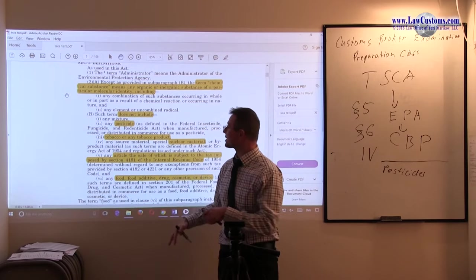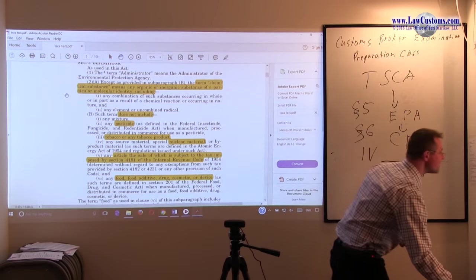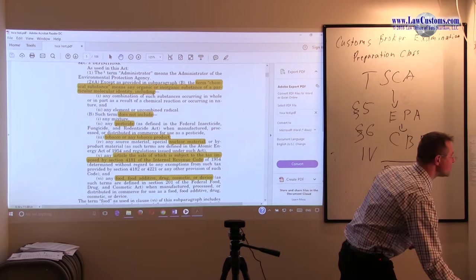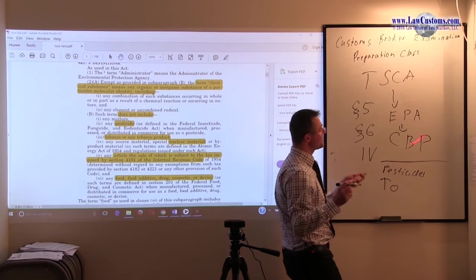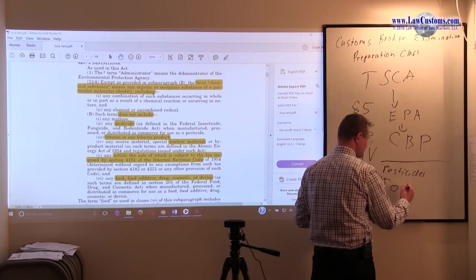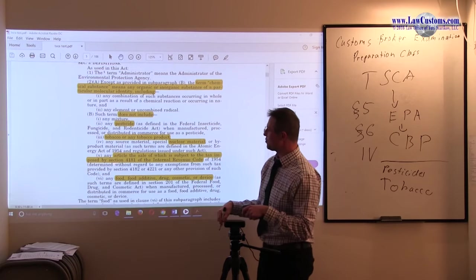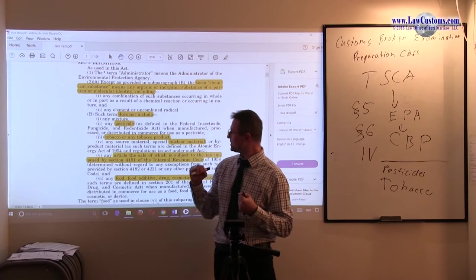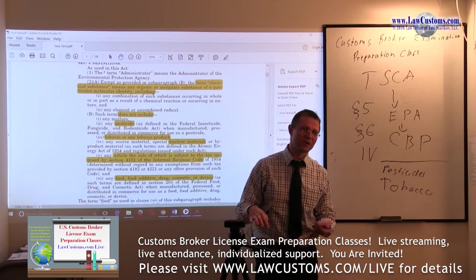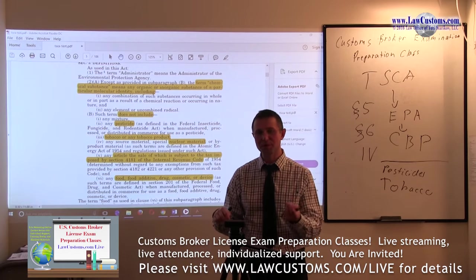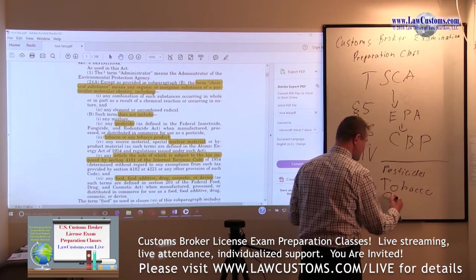Tobacco or any tobacco products—we just talked about the excise taxes. Tobacco products are outside the jurisdiction of EPA's Toxic Substances Control Act. Then we have articles for sale subject to tax under Section 4181 of the Internal Revenue Code—basically arms and ammunition. Bullets and gunpowder, which is made from chemicals, are outside, so guns are excluded.